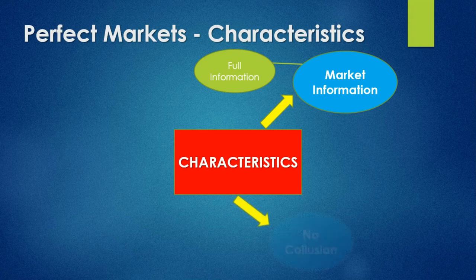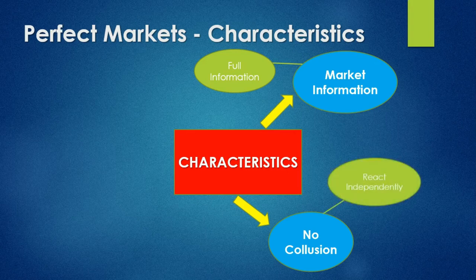The next characteristic looks at no collusion. Collusion is where businesses would work together to try and influence a price. But because these perfect markets are price takers, there is therefore no collusion, and this means that they need to act independently. It's important to note that collusion is illegal in South Africa.